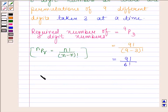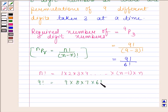We know that n factorial is equal to 1 into 2 into 3 into 4 into n minus 1 into n. So, 9 factorial is equal to 9 into 8 into 7 into 6 factorial. Thus, 9 factorial upon 6 factorial is equal to 9 into 8 into 7 into 6 factorial upon 6 factorial.